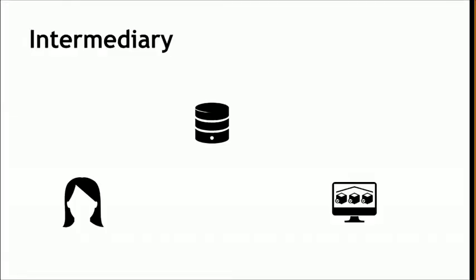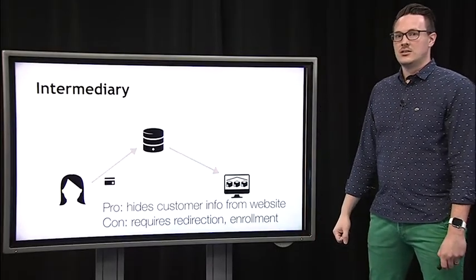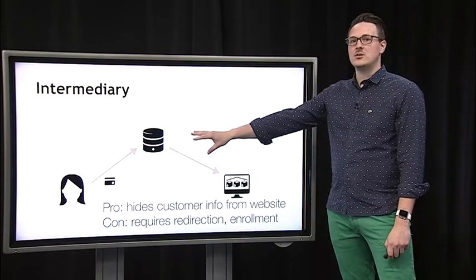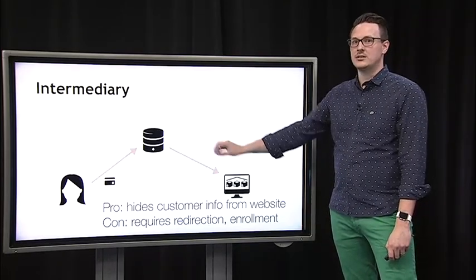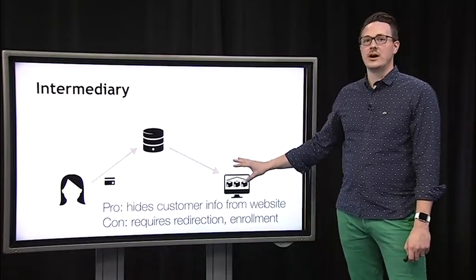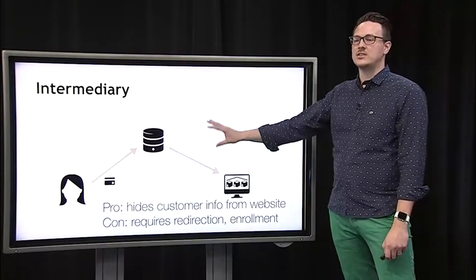The other architecture you may see if you use something like PayPal is an intermediary architecture. In this case, there's a company that sits between you and the website. You send your credit card details to this company; it approves the transaction and settles with the website. The advantage of this type of architecture is privacy — the user is never fully disclosing all their credit card details to the website.